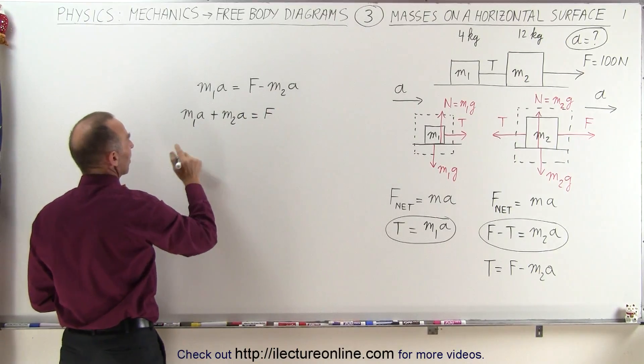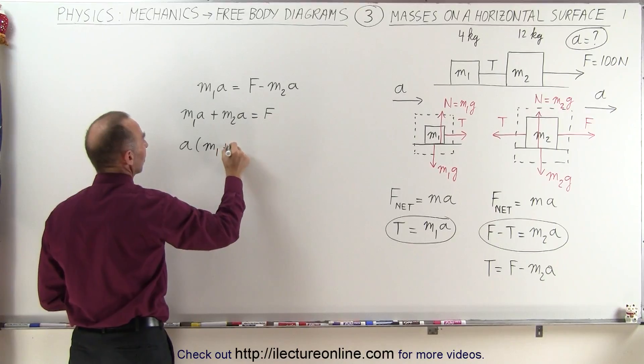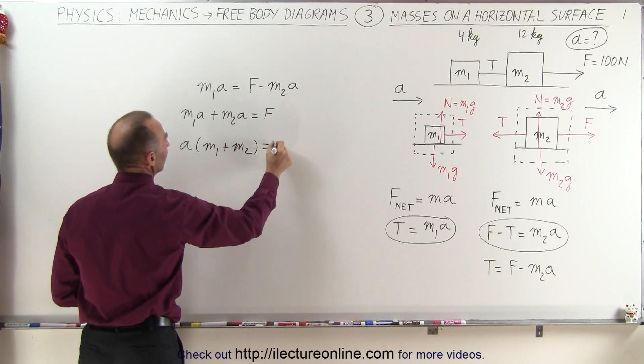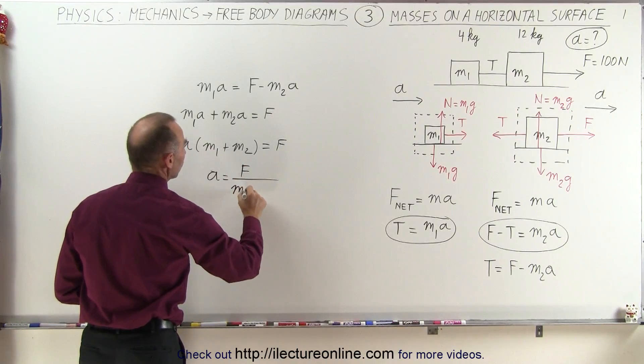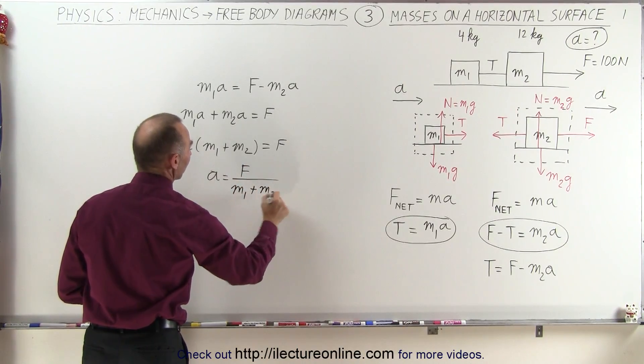We can then factor out an a, a times m1 plus m2 is equal to F, and finally the acceleration is equal to the force divided by the two masses m1 plus m2.